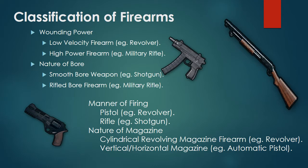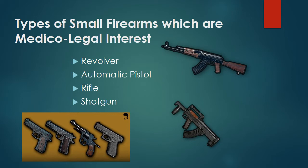By nature of magazine: cylindrical revolving magazine for revolvers, vertical or horizontal magazine for automatic pistols. Types of small firearms of medico-legal interest: revolver, automatic pistol, rifle, and shotgun. The pictures show examples of cartridges or ammunition.